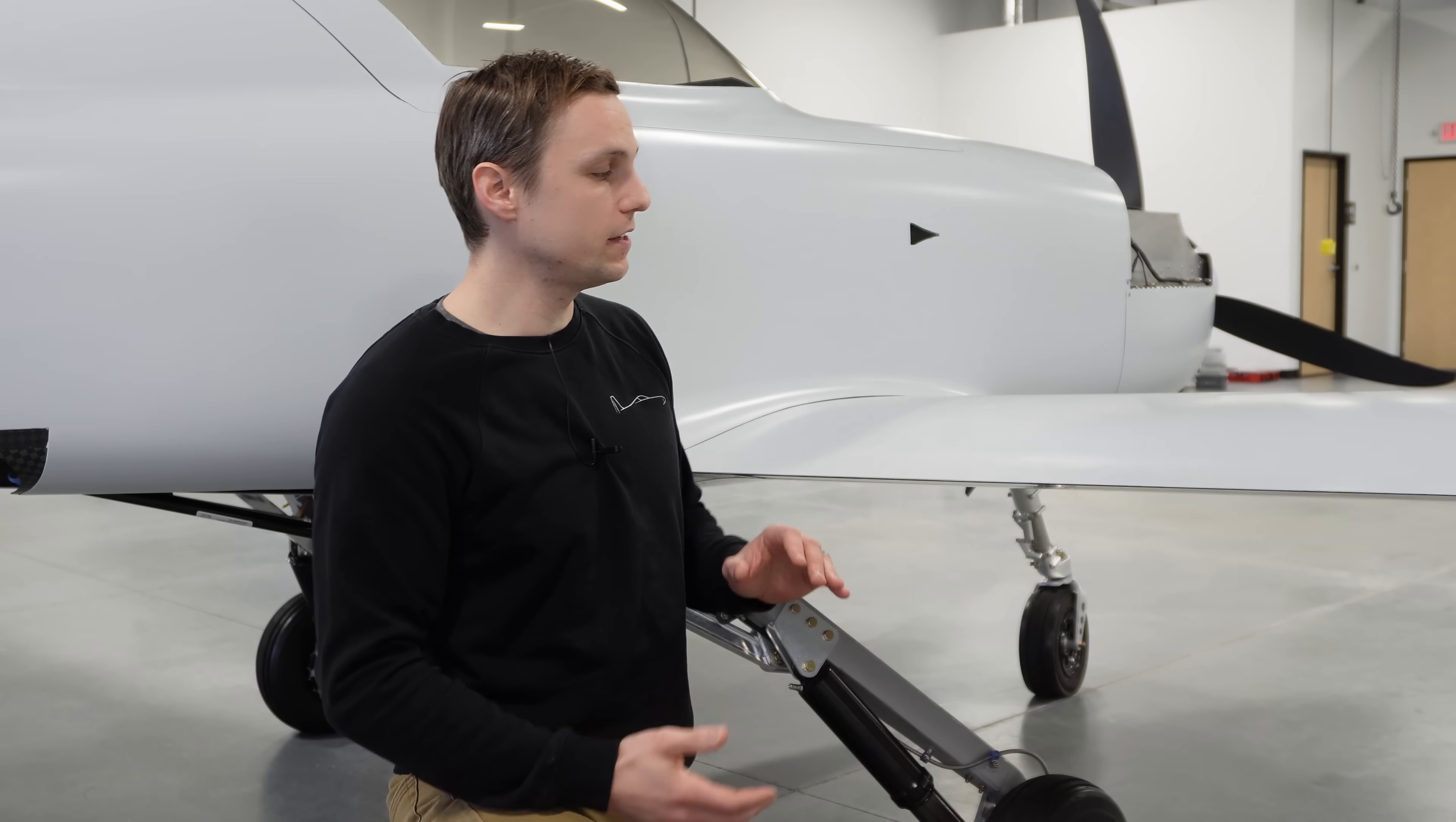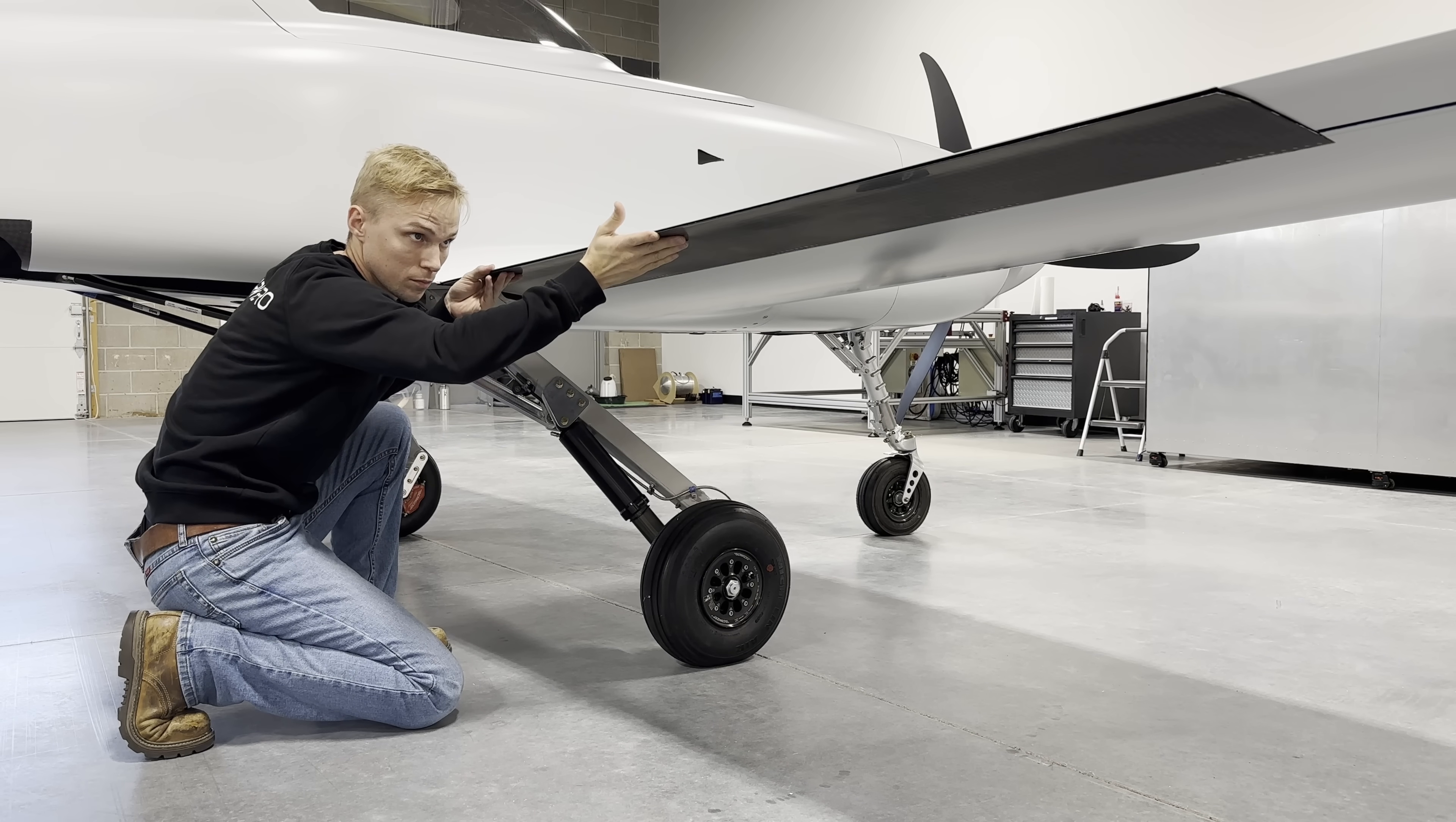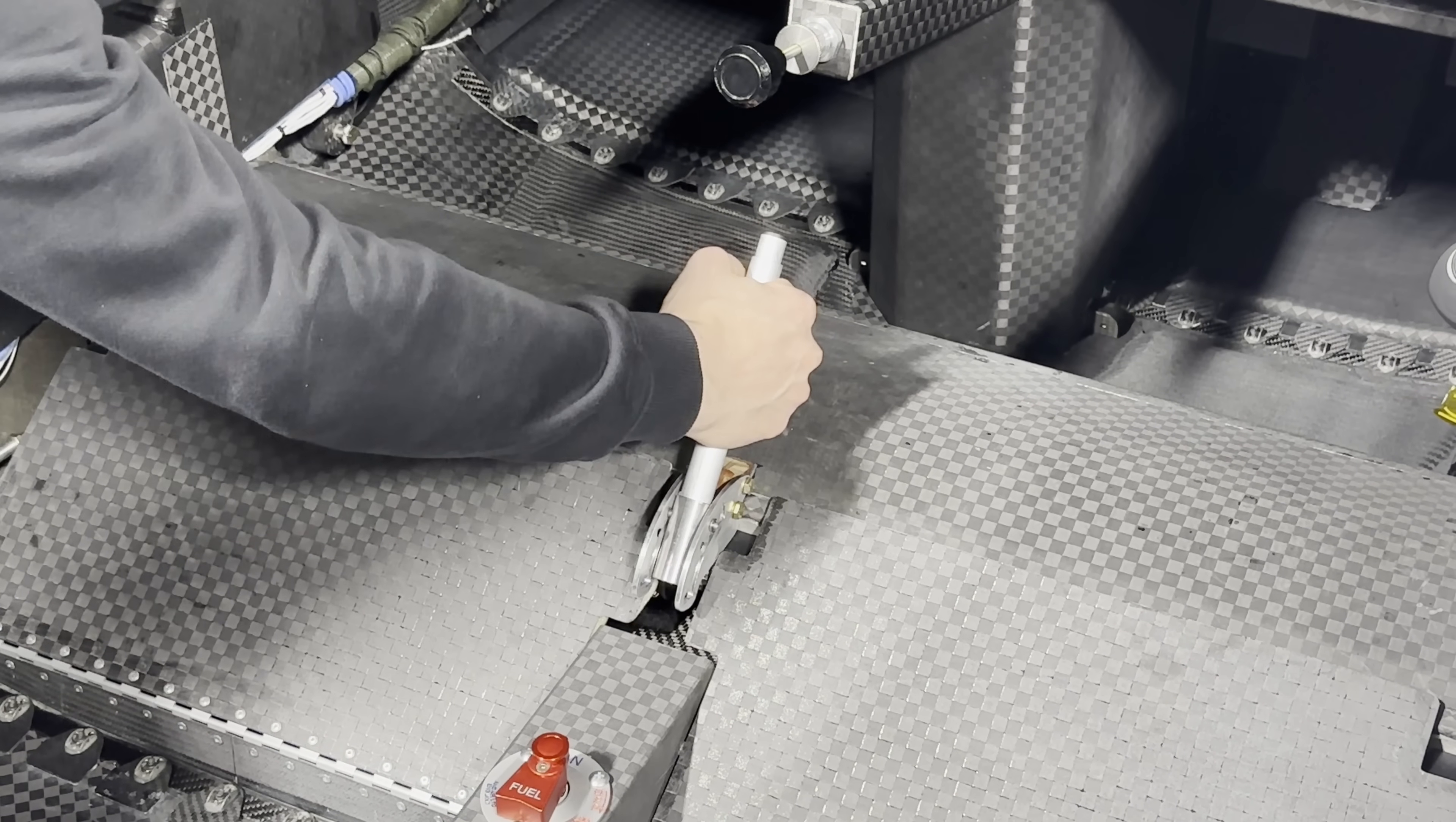As I mentioned, this aircraft uses a split flap configuration where the flap hinges from the bottom wing skin, where the top wing skin remains fixed. We've briefly shown the flaps in other videos, but it wasn't until recently that we had all the flap actuation hardware installed that allows us to control them from the cockpit.